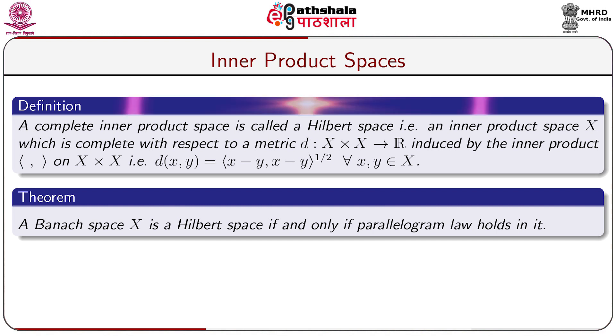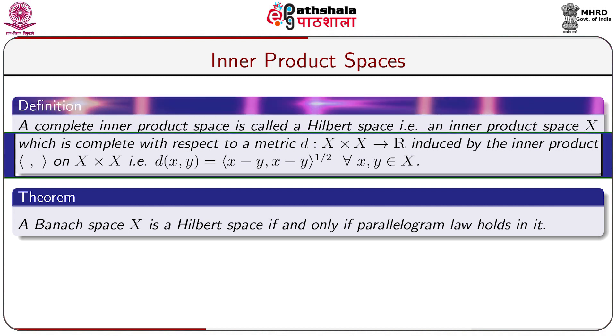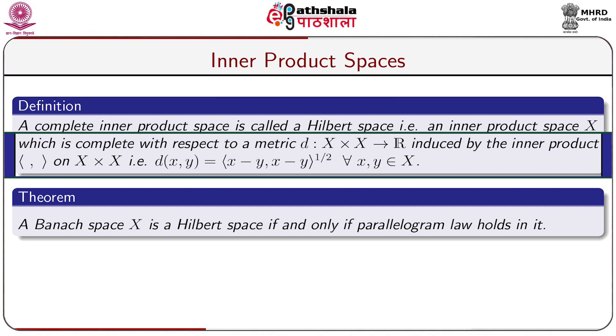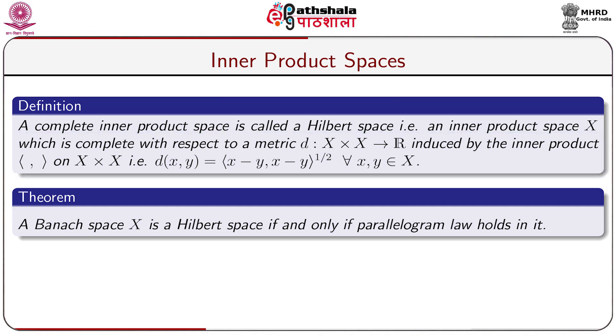A complete inner product space is called a Hilbert space, that is an inner product space X which is complete with respect to the metric d(x, y) = square root of ⟨x − y, x − y⟩ for all x, y belonging to X. Every inner product space is a normed space, and that is why every Hilbert space is a Banach space.